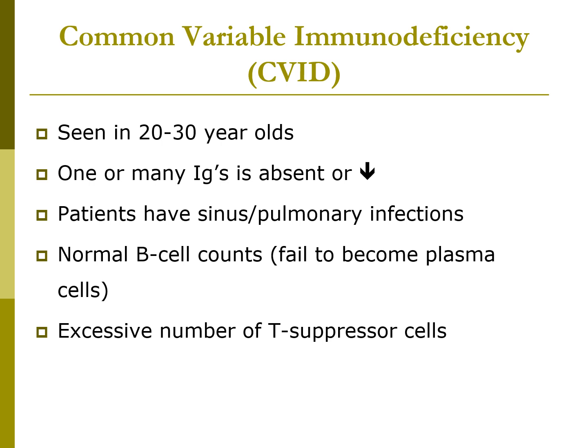Common variable immunodeficiency, also known as CVID, is usually seen in 20 to 30 year olds, but can be seen in children as young as 24 months of age. This appears to be a late-onset disorder. One or many immunoglobulins are absent or severely decreased — usually IgM and IgG are severely decreased. Patients have sinus and pulmonary infections.